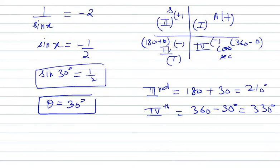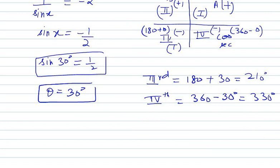From third quadrant and fourth quadrant we get the value as 210 and 330 degree. Now we need to convert them in radians.